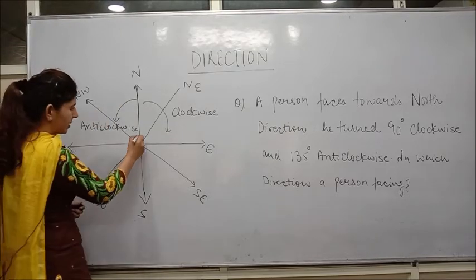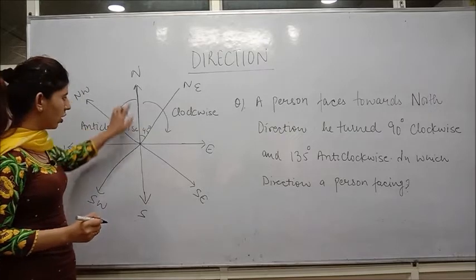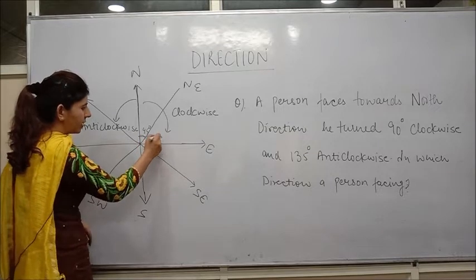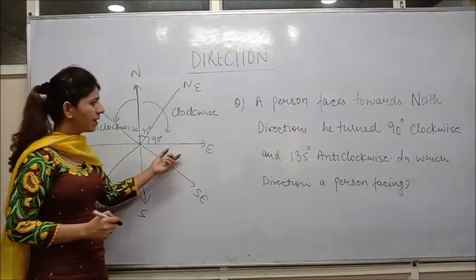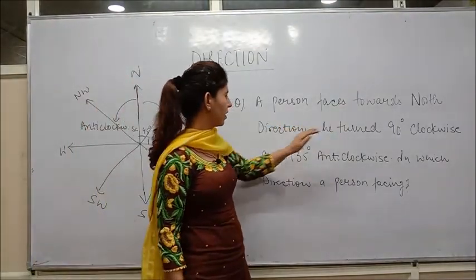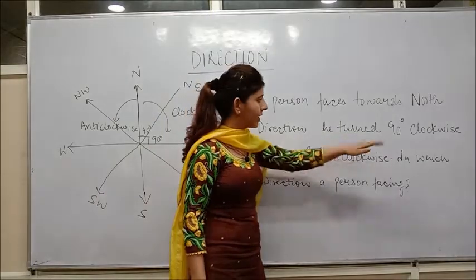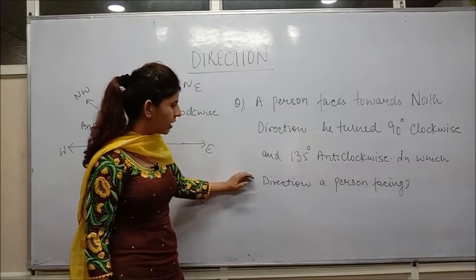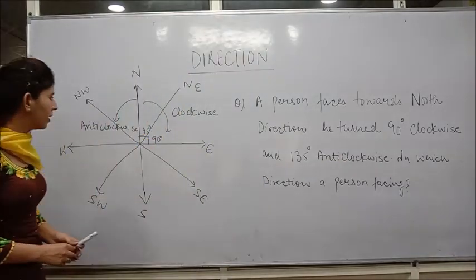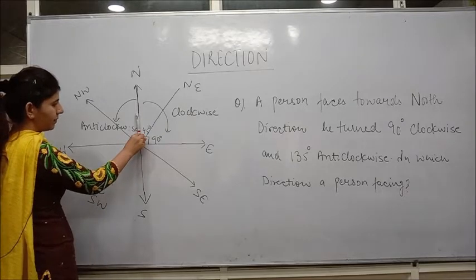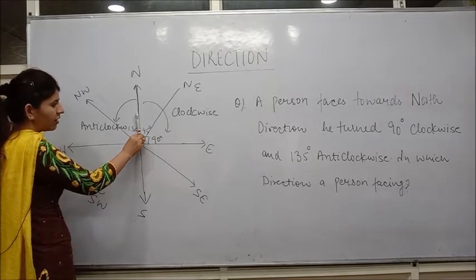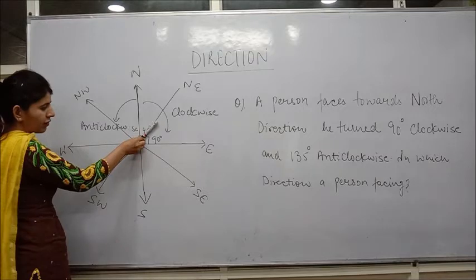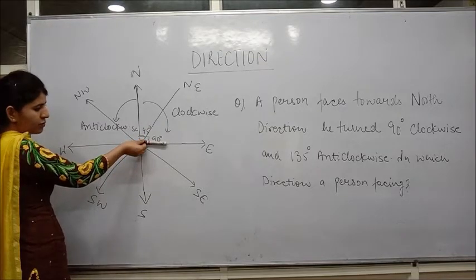The angle between north and northeast is 45 degrees, and between north and east the angle is 90 degrees. For example, a person is facing towards north direction and turned 90 degrees clockwise. Clockwise direction is towards this side, so the person turns 90 degrees clockwise. From north, he comes to which position? East.